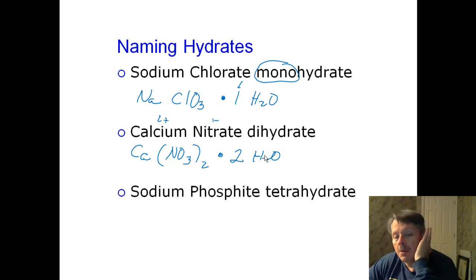How about the last one? See if you can do that. Sodium is Na. Phosphite. Well, phosphate is PO4. So phosphite is PO3. This has a three minus charge and a one plus charge. So I have to have three sodiums. Then I crisscross. And I have to have tetra. Tetra is for hydrate.